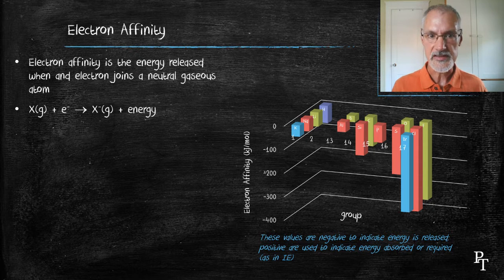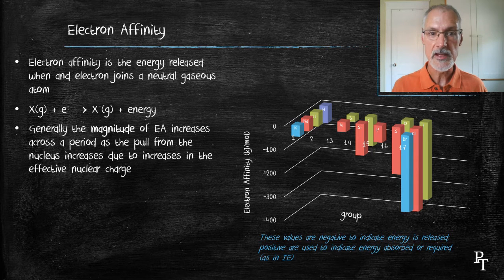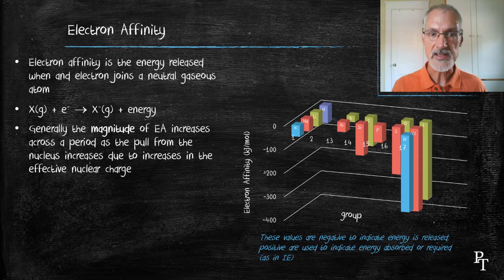But again, we see the same sort of pattern. As we move from left to right across any given period, due to the increase in the effective nuclear charge, there's more energy released as the electron moves in towards the nucleus.